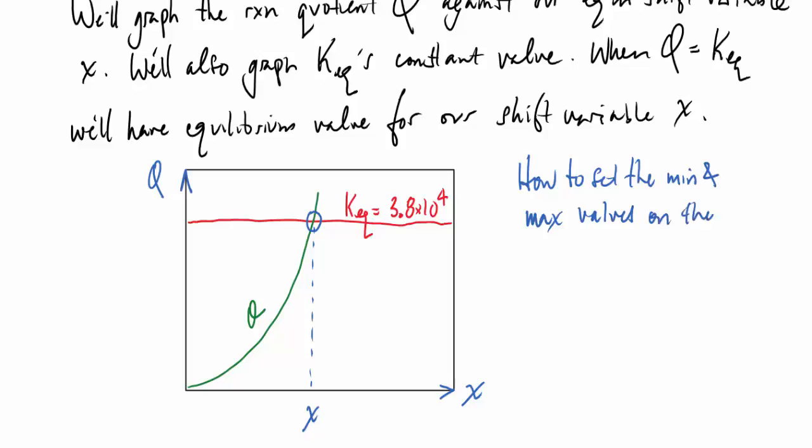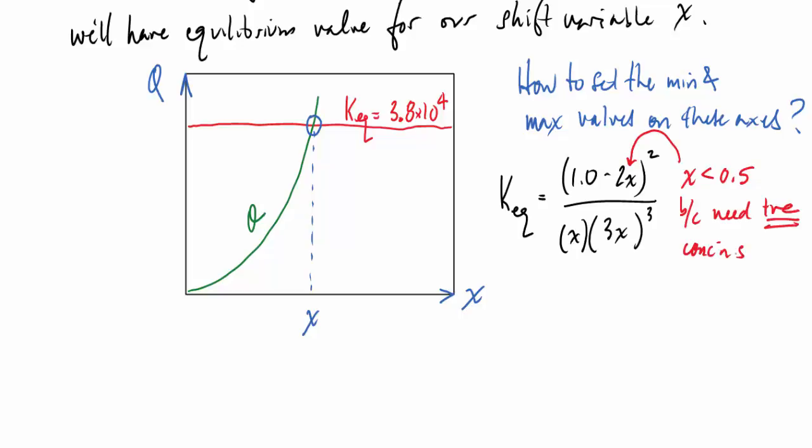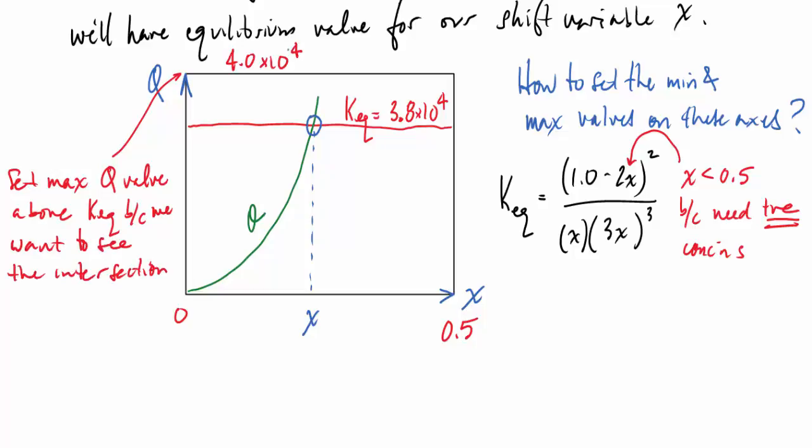So the question is how to set the minimum and maximum values. Well, the Keq, we've got this value here, expression from above. You notice that x there must be less than 0.5, because we need this value to be positive, 1 minus 2x must be a positive number. So x can be no bigger than 0.5. And the maximum reaction quotient here should be above Keq, because we want to see where the intersection point lies. So I'll choose 4 by 10 to the 4 there, that's going to work.